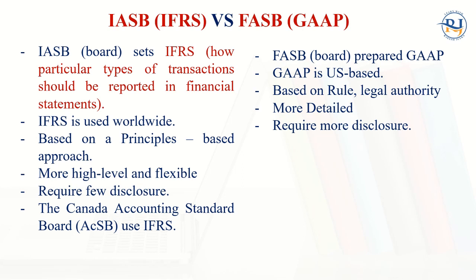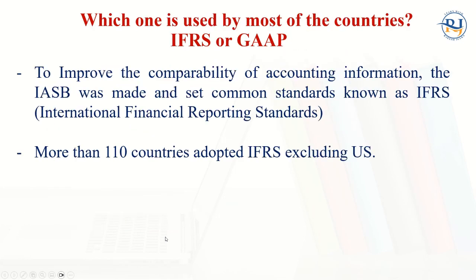In case of IFRS it requires fewer disclosures, but GAAP requires more disclosures. Disclosures mean information which is very important and can be material for the decision maker — it should be disclosed in the financial statements or perhaps under a special note, so that investors or outside parties are able to take decisions on the basis of that information. The Canada Accounting Standard Board also uses IFRS. More than 110 countries have adopted IFRS, excluding the US.